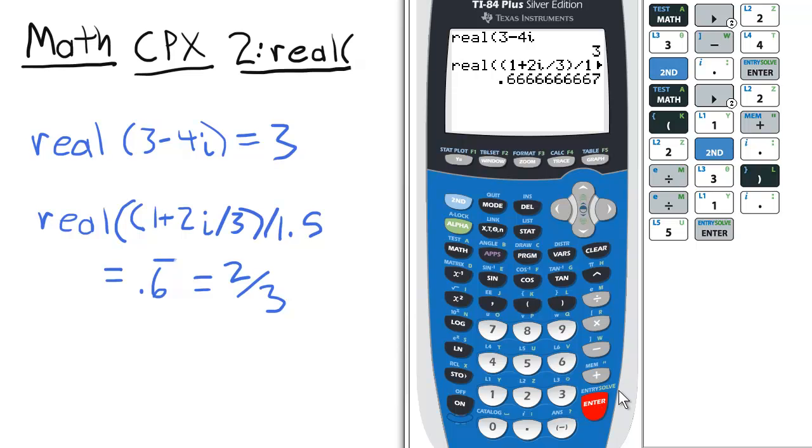And remember that number was 0.6 repeating plus 0.4 repeating i. So now we have the real part of that, which is 0.6 repeating.